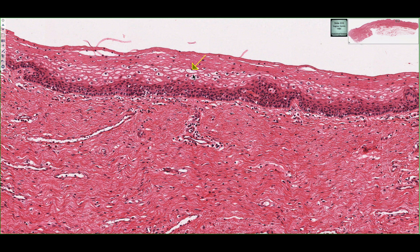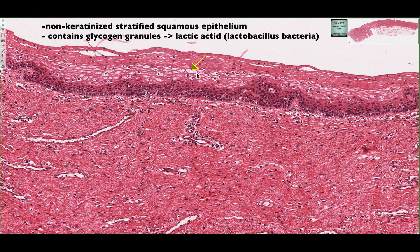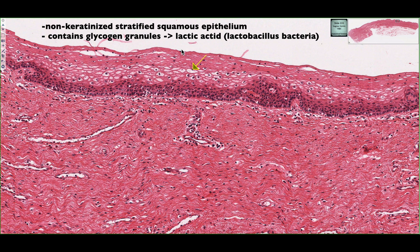This arrow is depicting an epithelial cell where we can see all this evacuated white space. This space is actually filled with glycogen granules, and we can't see the granules because they are removed through H&E staining and processing.